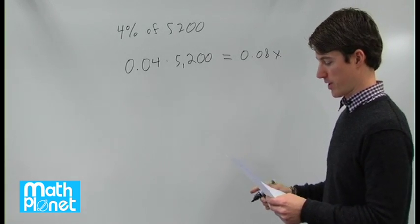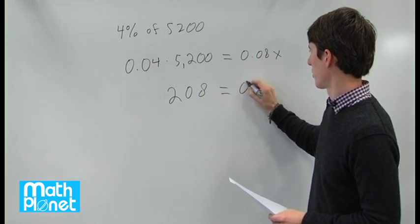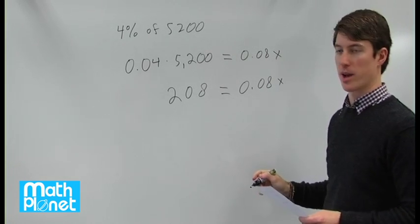So if we multiply this out, we'll get 208 equals 0.08 times x. So now we can just solve for x algebraically.